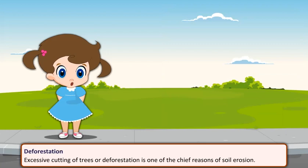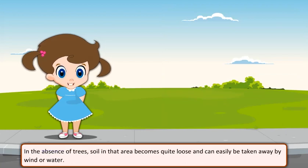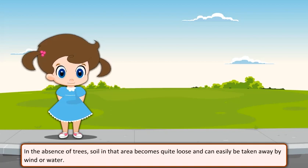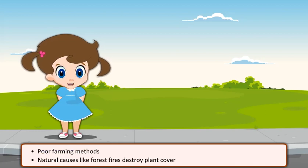Deforestation. Excessive cutting of trees or deforestation is one of the chief reasons of soil erosion. In the absence of trees, soil in that area becomes quite loose and can easily be taken away by wind or water. Other causes are overgrazing by sheep and cattle, poor farming methods, and natural causes like forest fires that destroy plant cover.